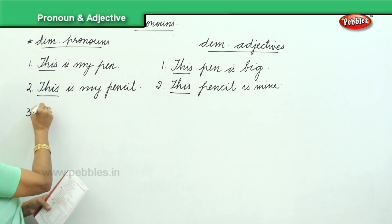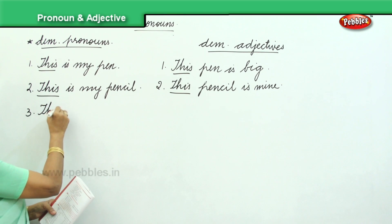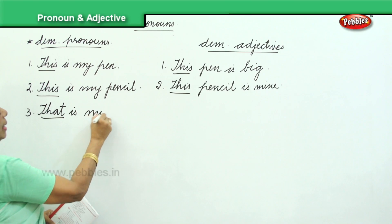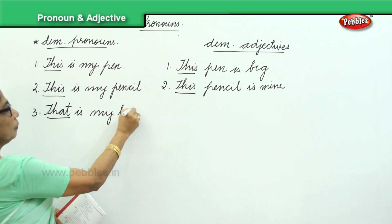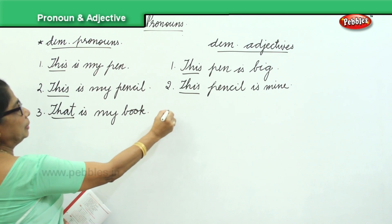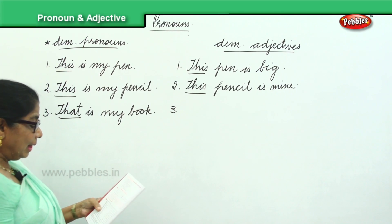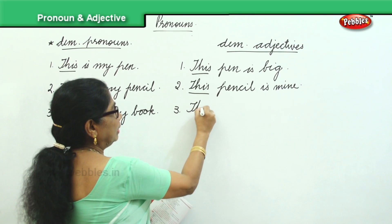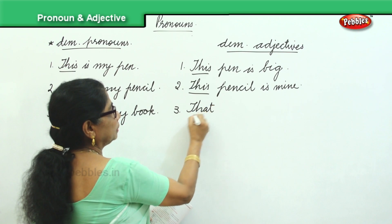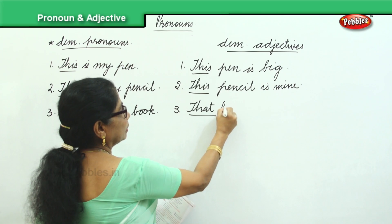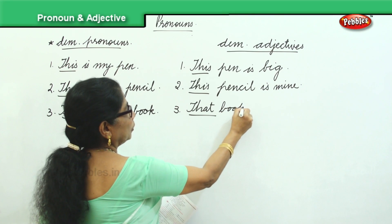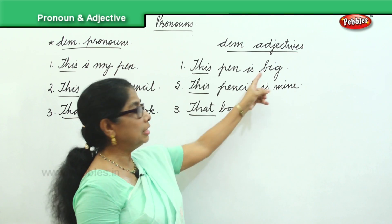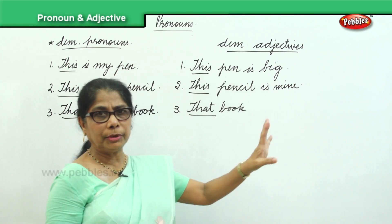'That is my book' — that is the demonstrative pronoun. For the demonstrative adjective, you will say 'That book is mine.' You can either say 'That book is mine' or 'That book is big' because it is an adjective.